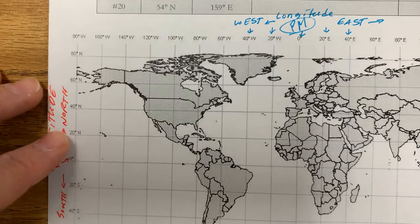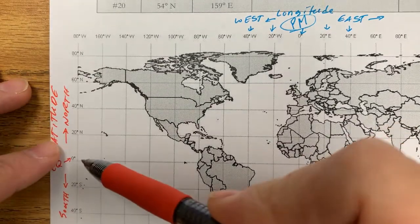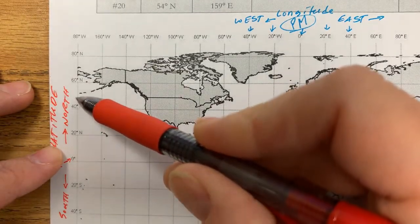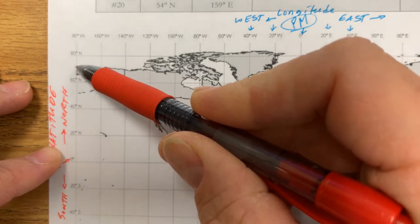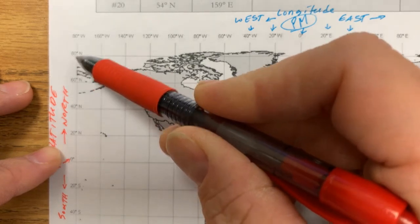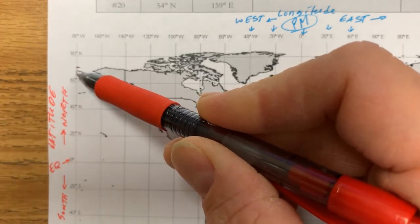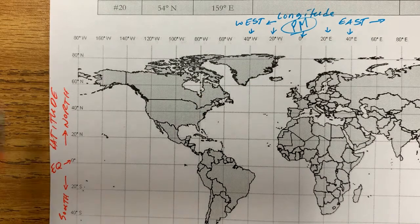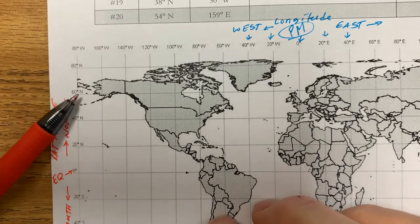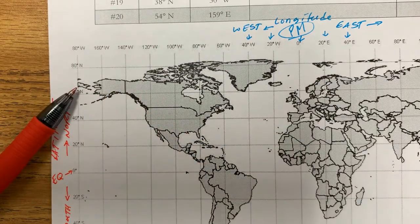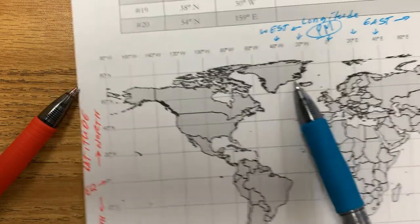So first of all, 64 degrees north would be going this way to 64. Now we're going to assume that 70 is directly between 60 and 80, so 64 is going to be probably right about here-ish. So anywhere along this line right here is 64 degrees north latitude.